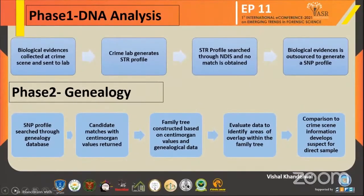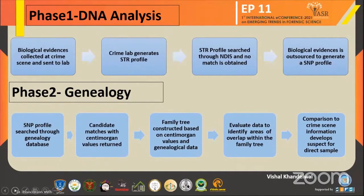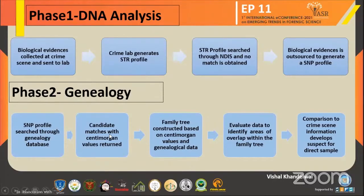There are three phases used in forensic genealogy. The first is DNA analysis. We go to the crime scene, where biological evidence is collected and sent to the lab. A crime scene STR profile is generated. The STR profiles are then searched through the NDIS — the National DNA Index System. If no match is obtained, the biological sample is outsourced to generate SNP profiles.